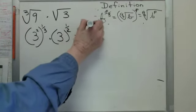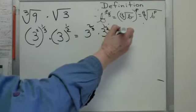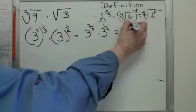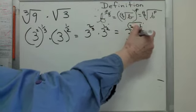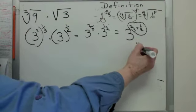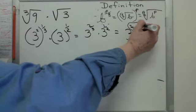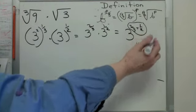So then I have 3 to the 2/3rds times 3 to the 1 half equals 3 to the 2/3rds plus 1 half. Now I have to add those exponents, right? So 4 over 6 plus, what's that one? 3 over 6, 7 over 6.